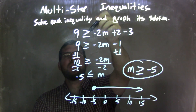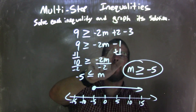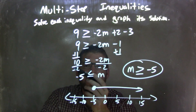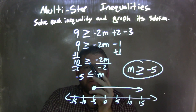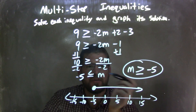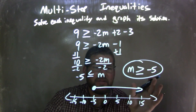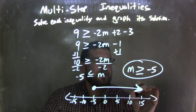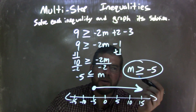Let's recap. We had 9 is greater than or equal to negative 2m plus 2 minus 3. Well, 2 minus 3 is negative 1, giving us minus 1. Then I added 1 to both sides, giving me 10 is greater than or equal to negative 2m. Then I divided both sides by negative 2, giving me m by itself and negative 5 on the left — 10 divided by negative 2. I had to flip the inequality from greater than or equal to, to less than or equal to, when dividing by a negative. I then rewrote it with m first, which also flips the inequality, giving us m is greater than or equal to negative 5 as our final answer. The graph shows a closed circle at negative 5 and an arrow shading to the right, because m is greater than or equal to negative 5.